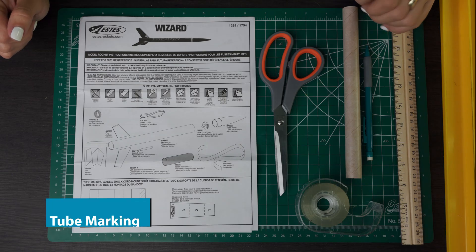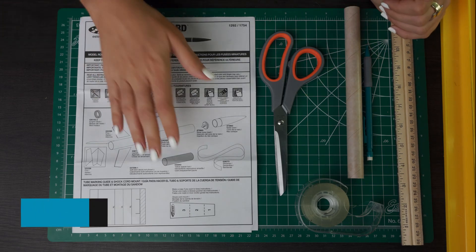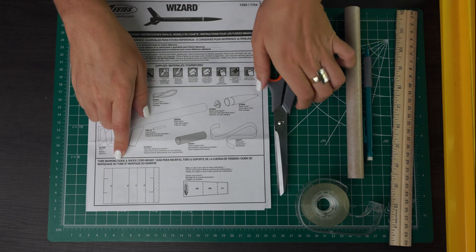Now we are going to mark the body tube so that we know where to attach the fins and the launch lug. First you're going to need to cut out this tube marking guide from your instructions.